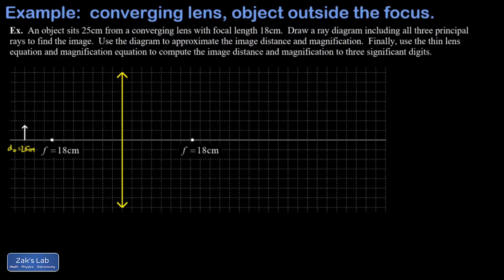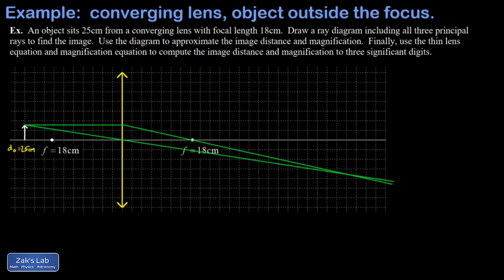First is the one coming in parallel to the principal axis, which is refracted through the focus. Next is the principal ray that passes through the center of the lens, which is unrefracted. Finally, the principal ray passing through the near side focus is refracted parallel to the principal axis.